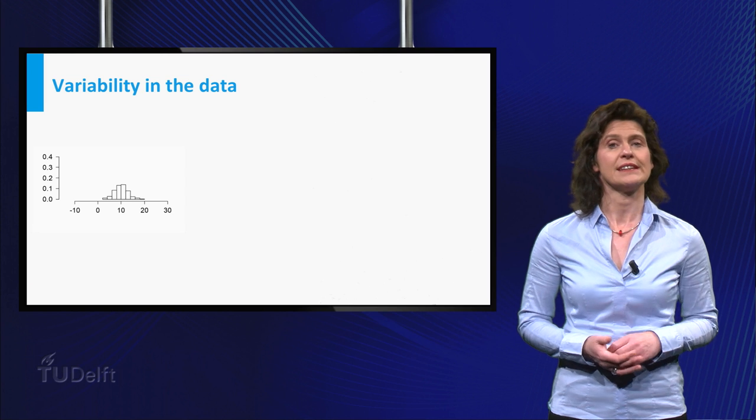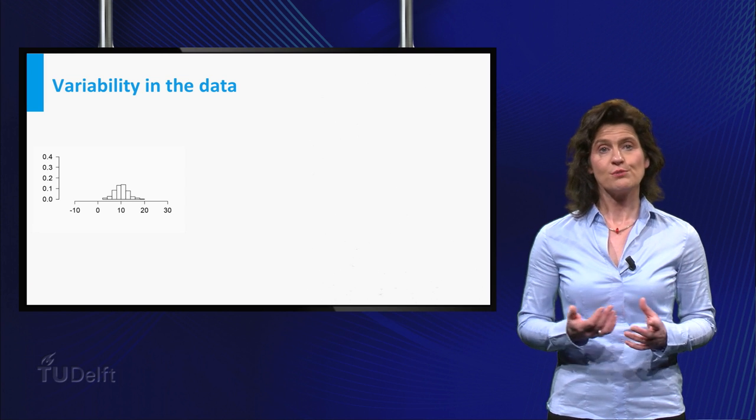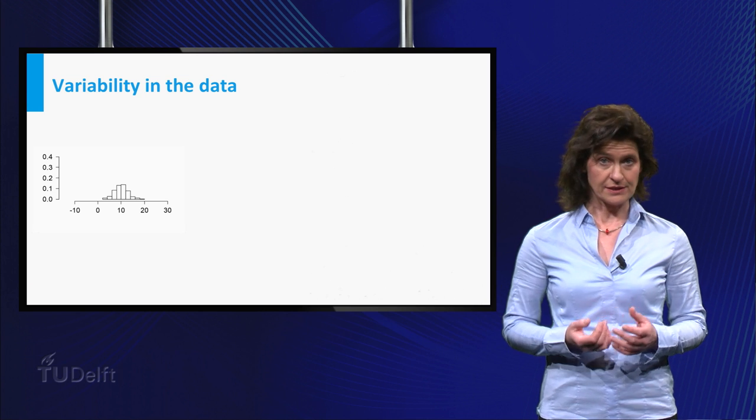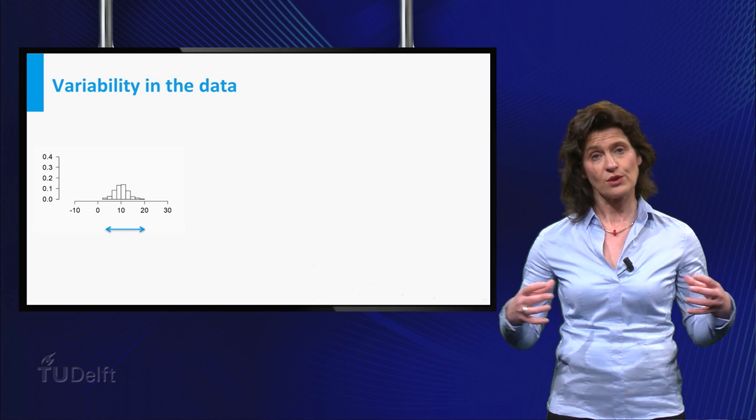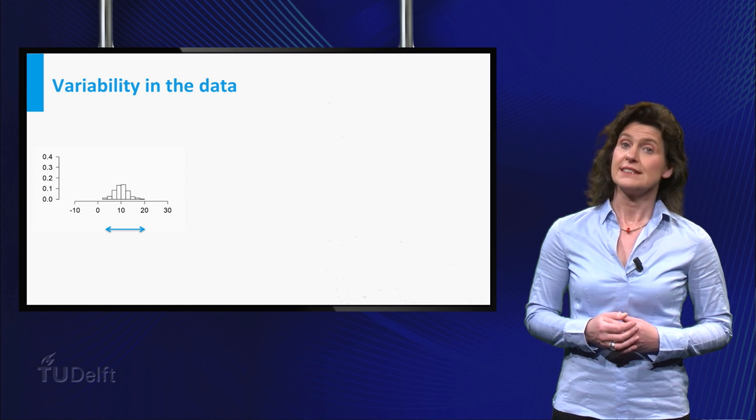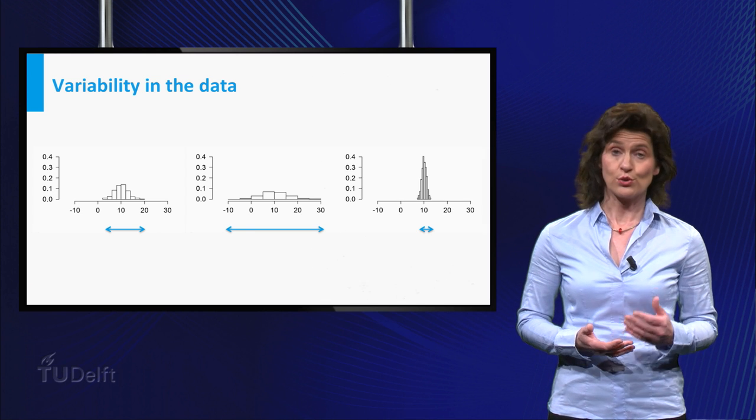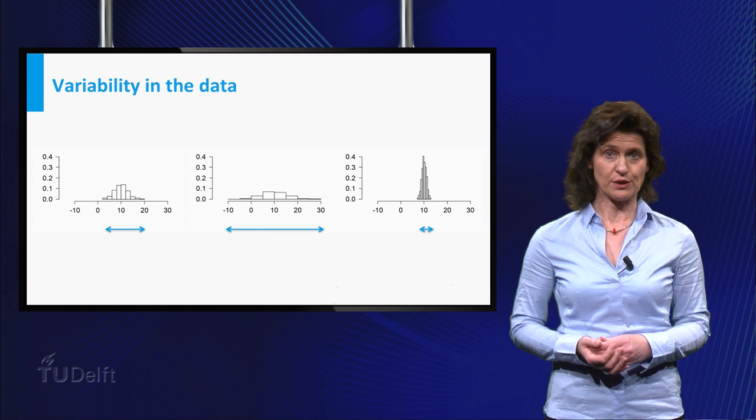Statisticians are also interested in the variability of the data around the center. In terms of the histogram of the data given here, the spread is related to the width of the bell shape. The spread in this dataset is less than the spread in the dataset visualized here. And this third dataset has even smaller variability.